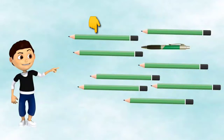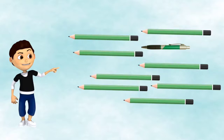Next, we have in this collection of objects a pencil, here is also a pencil, and this is a pencil, but this is not a pencil. This is a pen.